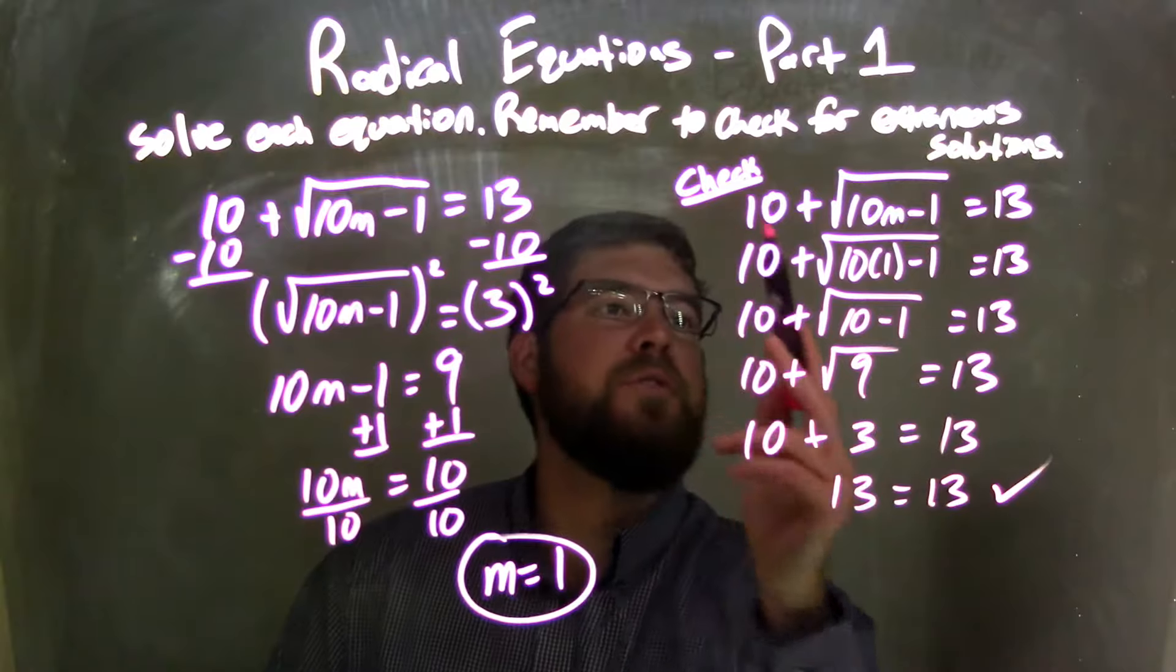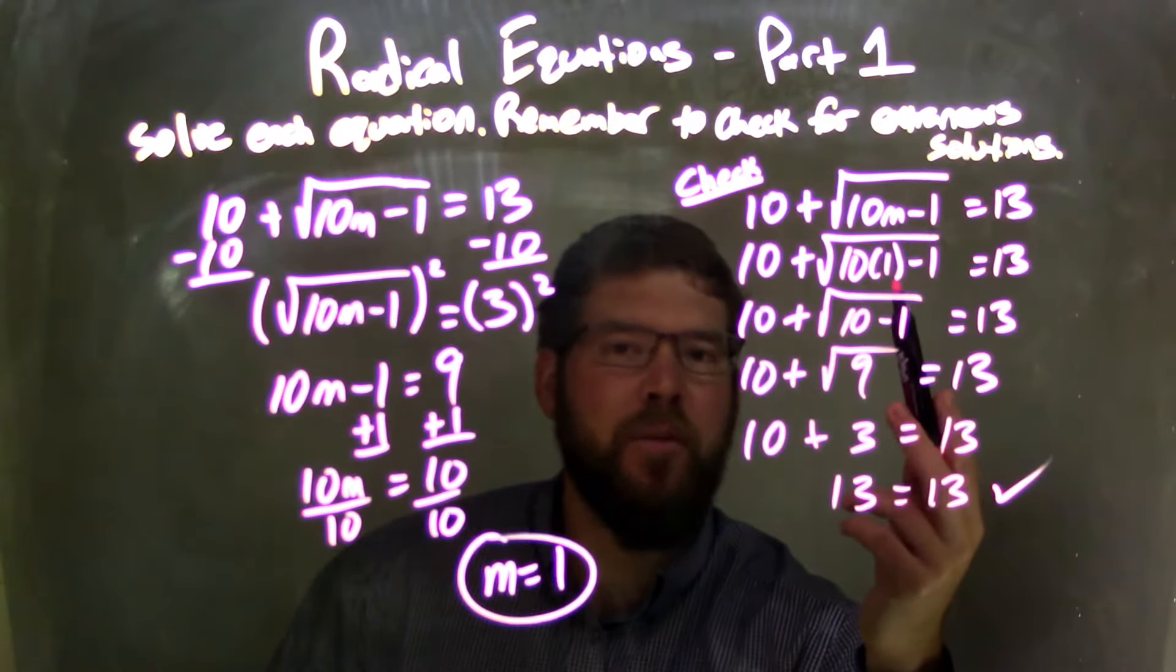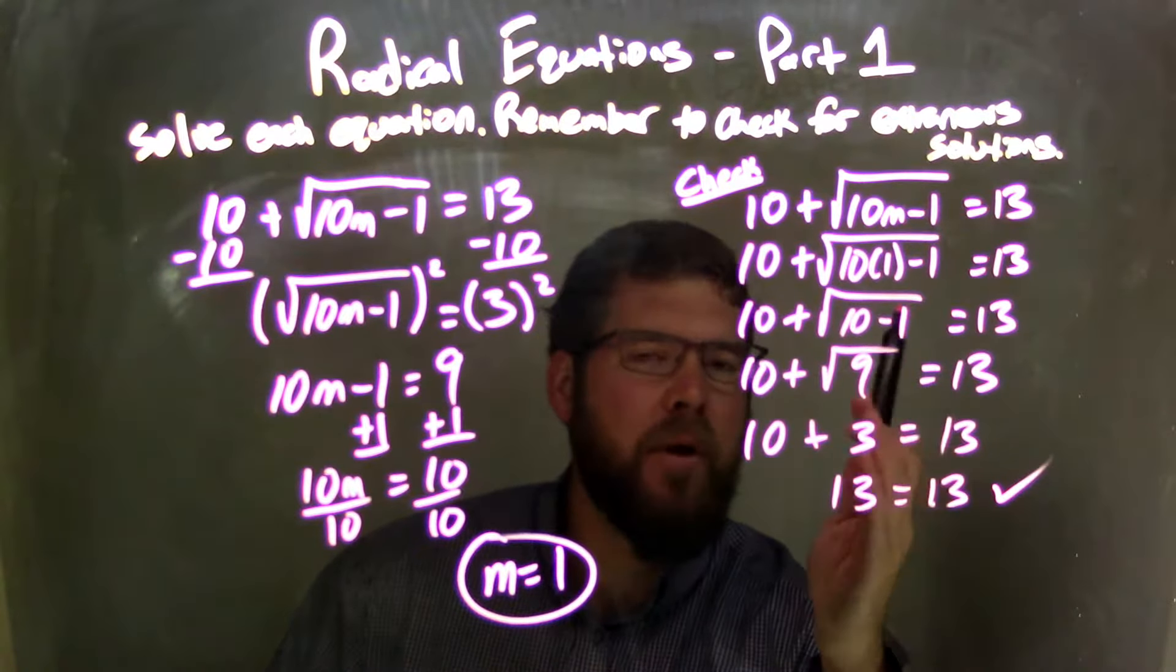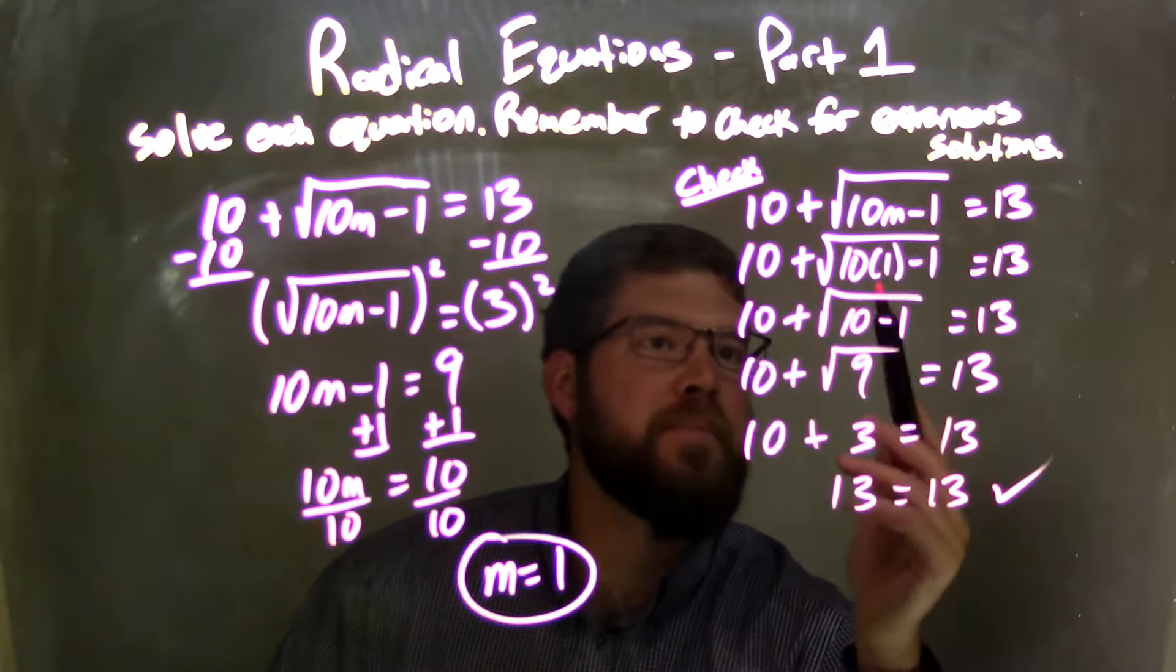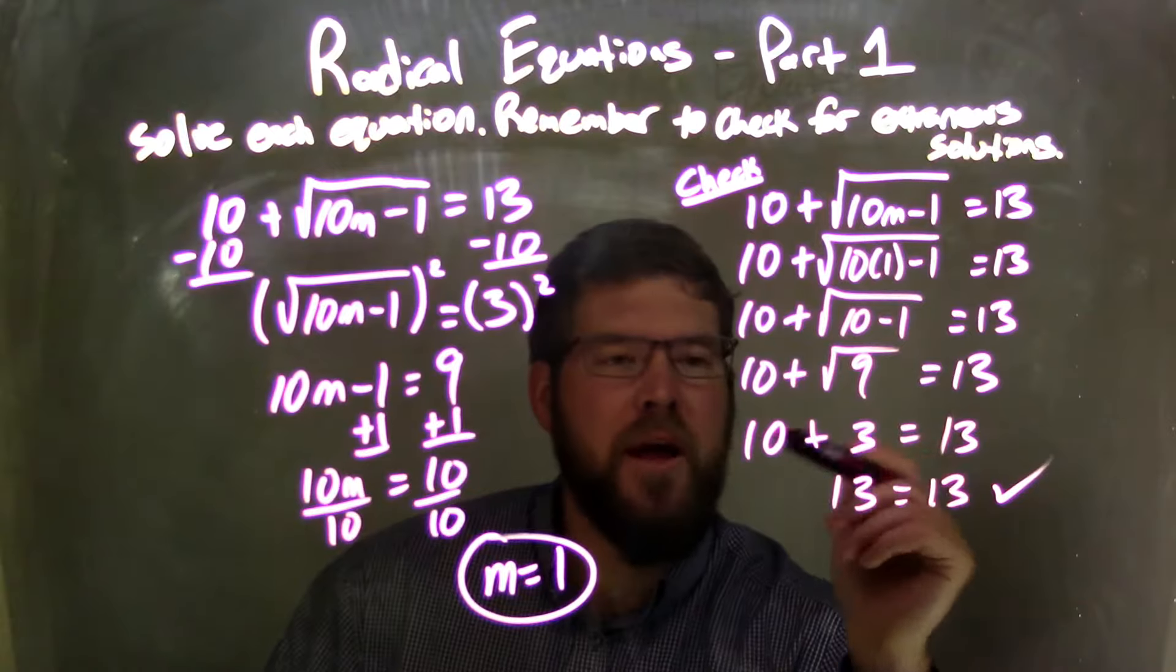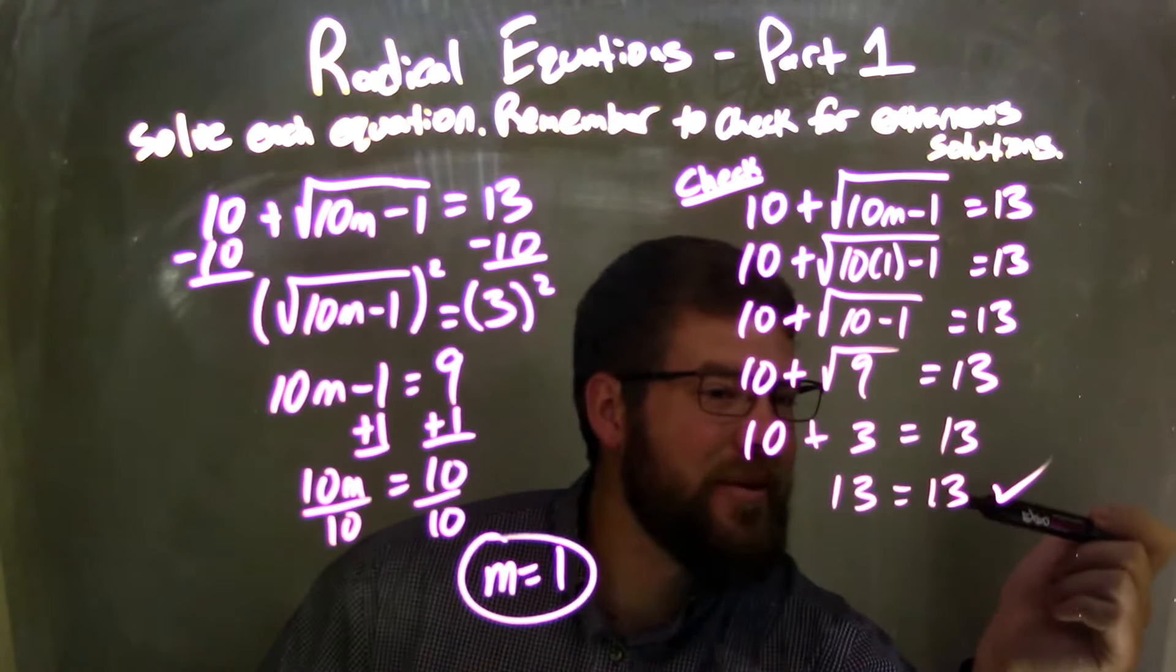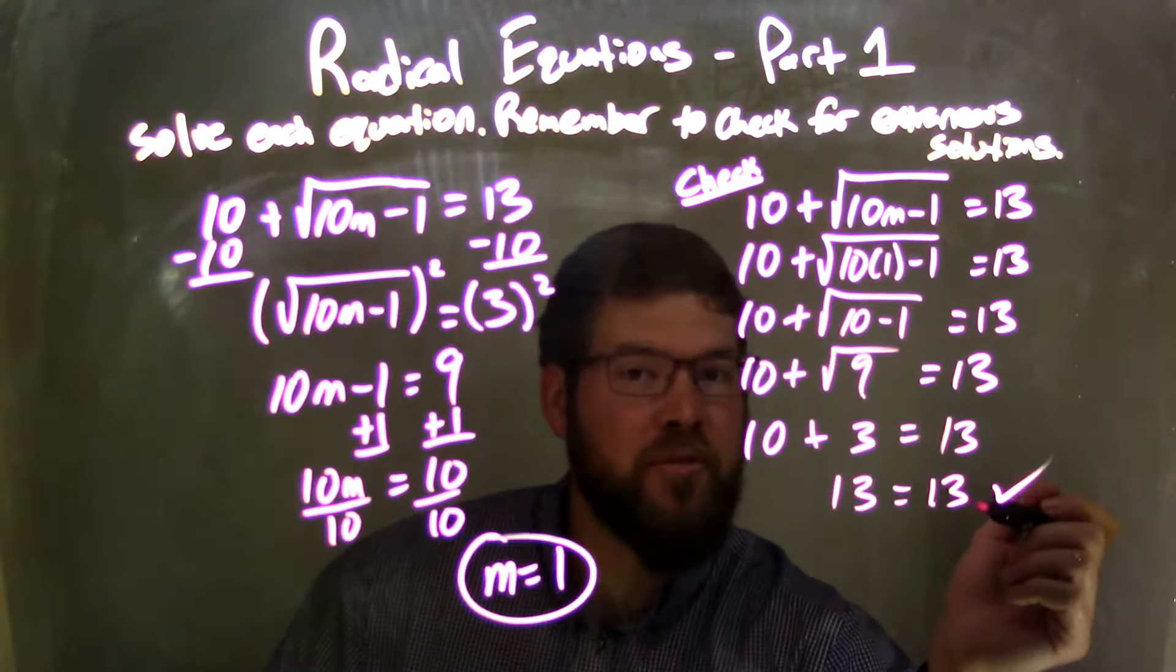I had to check for extraneous solutions, so I rewrote the equation and plugged 1 into the equation for the variable m. We then simplified, keeping all parts of the equation on either side of the equals sign. 10 times 1 is 10, minus 1 is 9. Square root of 9 is 3. And then bringing the 10 down the whole way, 10 plus 3 is 13. Seeing this 13 come all the way down, leaving me with 13 equals 13. That's true. So I'm confident that m equals 1 is my final answer.